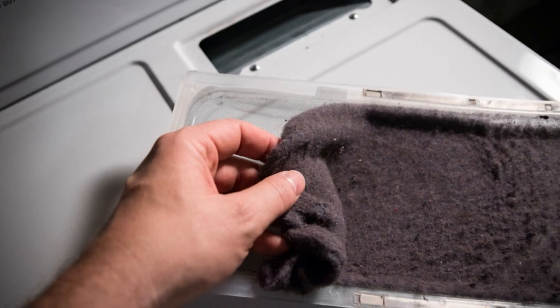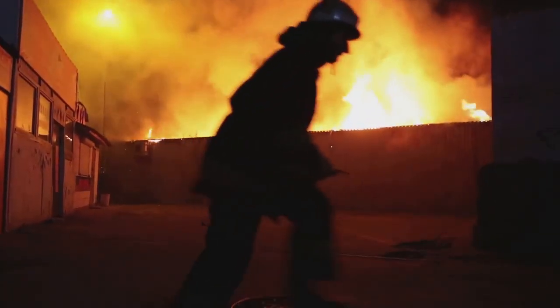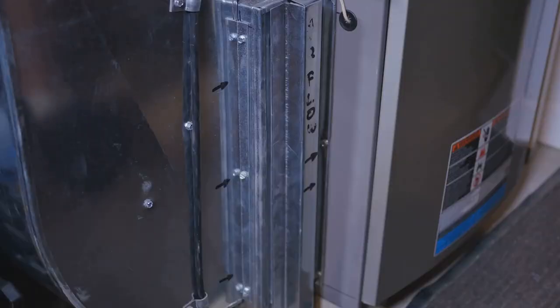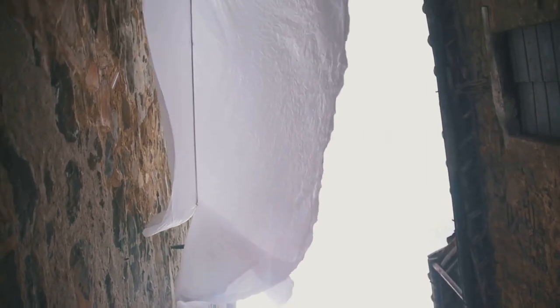Lint is a common byproduct of clothes drying. It seems harmless but it's a hidden menace. Lint buildup in dryer vents is a major fire hazard. It restricts airflow causing the dryer to overheat. This overheating can ignite the lint, leading to a fire. Regular cleaning is essential to prevent lint accumulation and reduce fire risks. Don't underestimate the power of this silent threat.